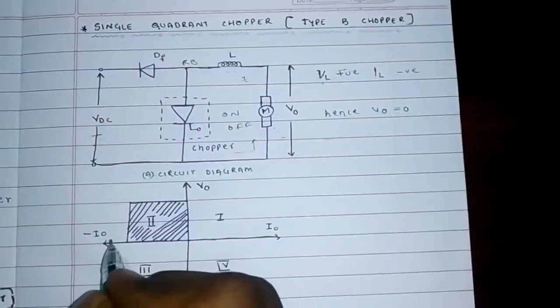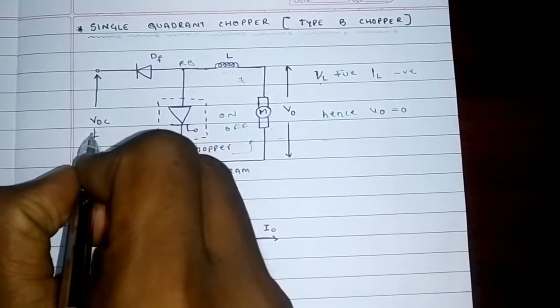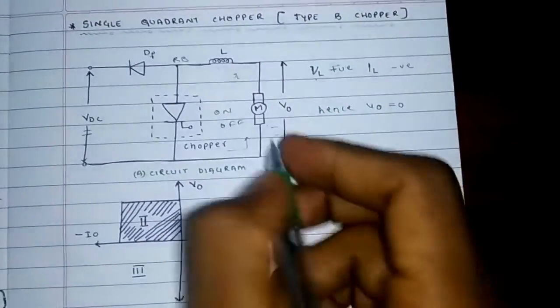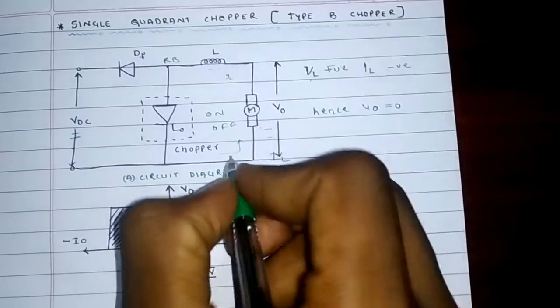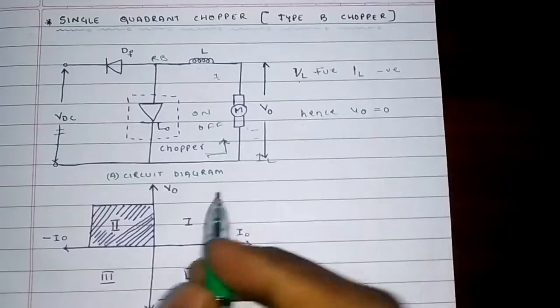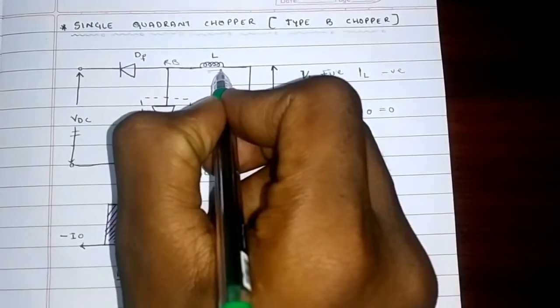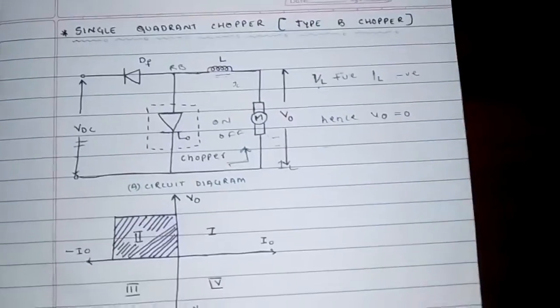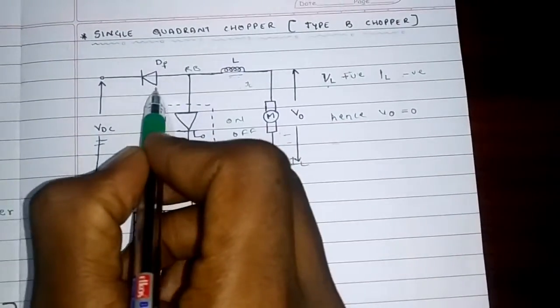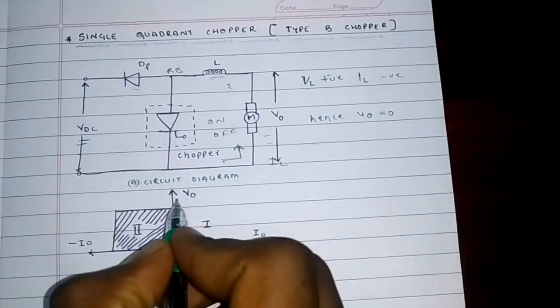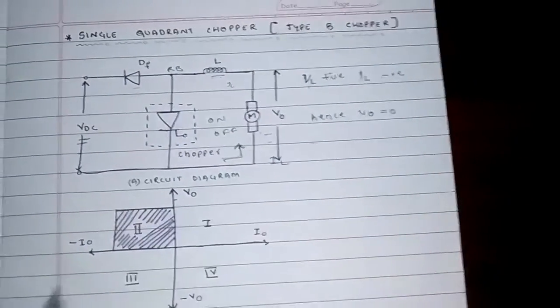When the chopper is off, it connects the source and load, and the load current flows in the opposite direction. This energy stored in the inductor is given to the source through the diode. Hence, the average load voltage is positive and the load current is negative.